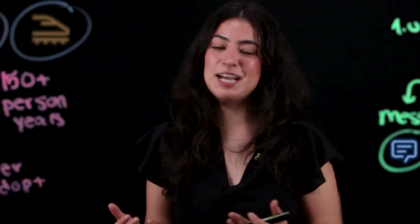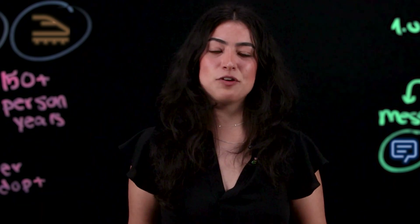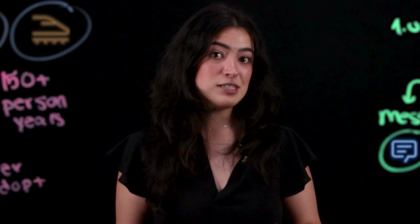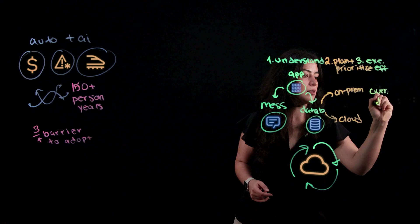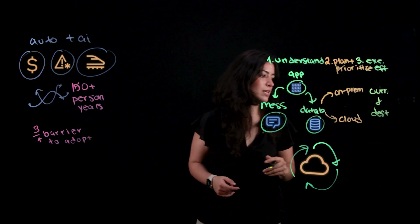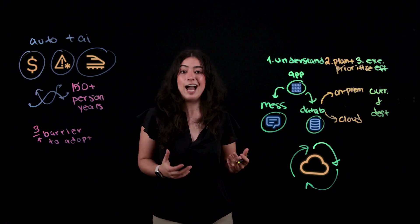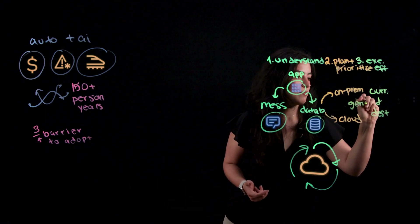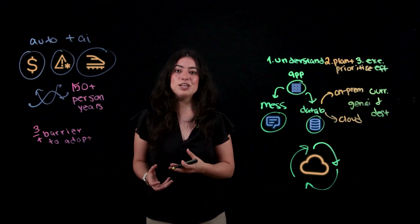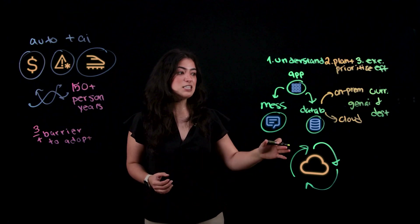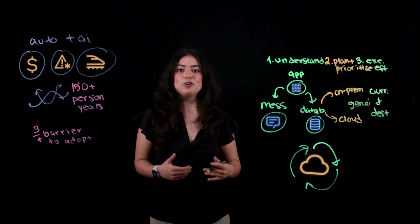Now that you have a plan, it's time to execute efficiently. For that, you need automation. The automation needs to convert configurations and code between your current and destination environment. Some of these conversions are fully automated, but complex ones require generative AI to make recommendations, explain code, and generate tests to validate the conversion. This makes your modernization journey efficient, freeing up your team to evolve applications for your new needs.